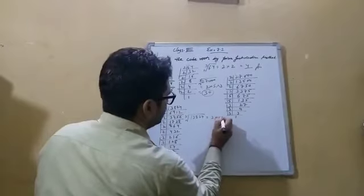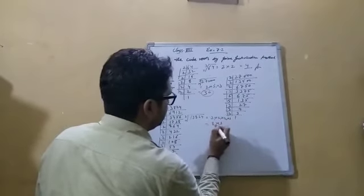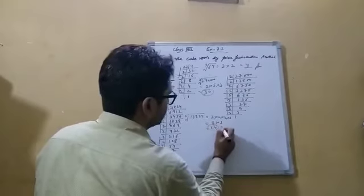2 times 2 is 4, 4 times 2 is 8, 8 times 3 is 24. The answer is 24. I hope you understand.